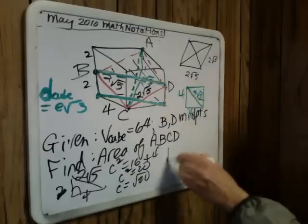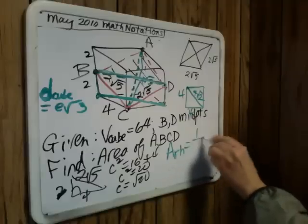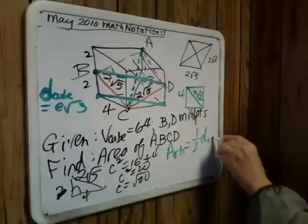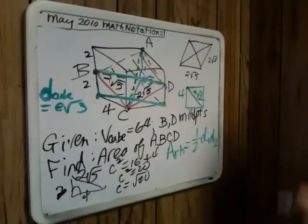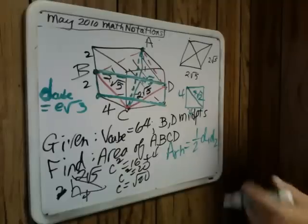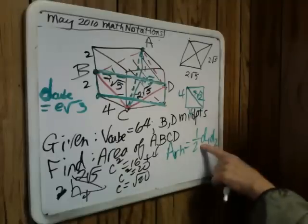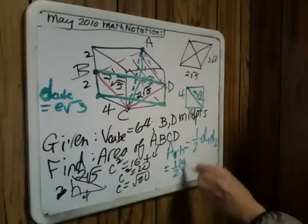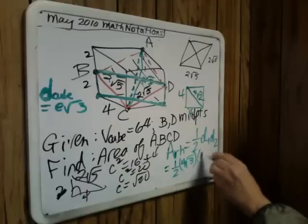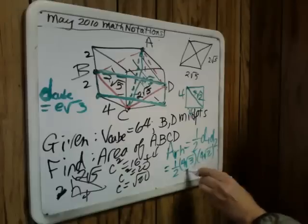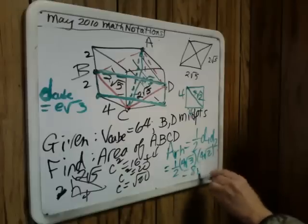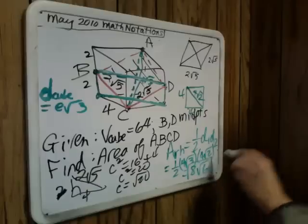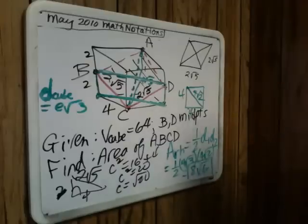So now we go to the area of a rhombus. One half the product of the diagonals. Good review. You don't need to do this. You can find an alternate way to get this. So that's one half. The longer diagonal, 4 radical 3. The shorter diagonal, 4 radical 2. 16 over 2. 8 radical 6 is your answer. Not the square root of 20. Right?